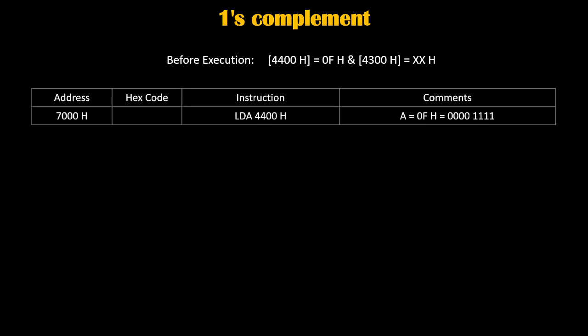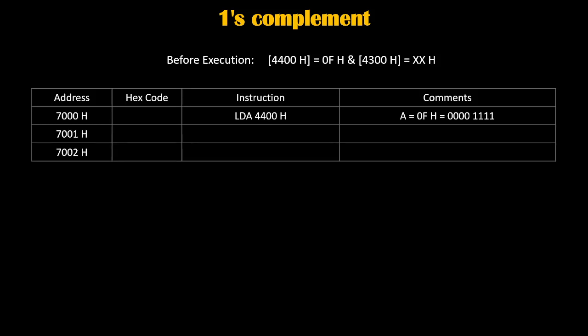LDA 4400h is a 3-byte instruction, so it will take 3 memory locations of our program. The opcode of LDA is written at 7000h, and the address 4400h is written in two bytes: first we write 00h at 7001h, and after that we write 44h at 7002h.